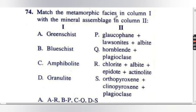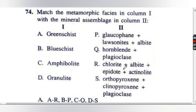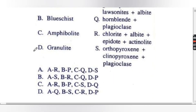The next question: match the metamorphic facies in column 1 with the mineral assemblage in column 2. Column 1: A1 is greenschist, B1 is blueschist, C1 is amphibolite, D1 is granulite. Column 2: A option is glaucophane plus lawsonite plus albite; B option is hornblende plus plagioclase; C option is chlorite, albite, epidote, and actinolite; D option is orthopyroxene, clinopyroxene, and plagioclase.